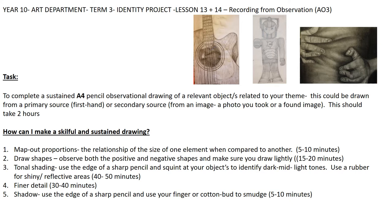The next stage is to draw out the shapes that you see. Observe both the positive shapes — the actual object you're drawing — and the negative shapes, so the shapes around the positive shapes. Make sure you draw lightly. This should take you between 15 to 20 minutes. Ensure you have a really sharp pencil when doing this, and if you are drawing lightly, then you can rub out any mistakes. Please get this correct before you go on to stage three.